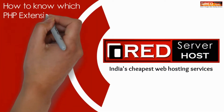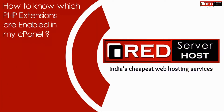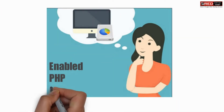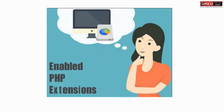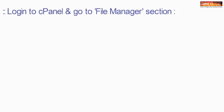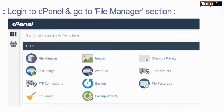Today in this video we will learn about how to know which PHP extensions are disabled in cPanel. For that, login to cPanel and then go to the File Manager section.